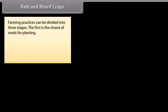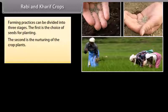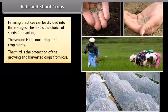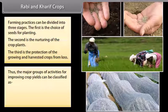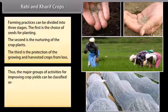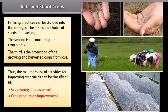Farming practices can be divided into 3 stages: the first is the choice of seeds for planting; the second is the nurturing of the crop plants; the third is the protection of the growing and harvested crops from loss. Thus, the major groups of activities for improving crop yields can be classified as crop variety improvement, crop production improvement, and crop protection management.